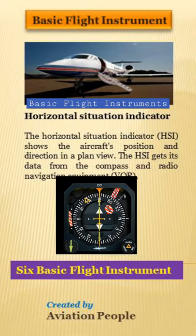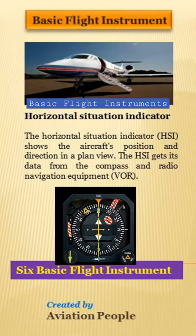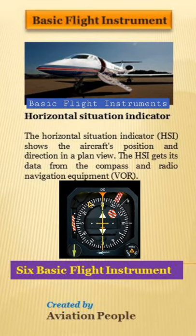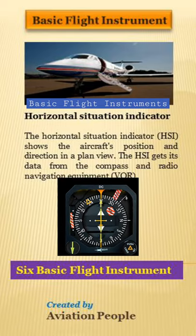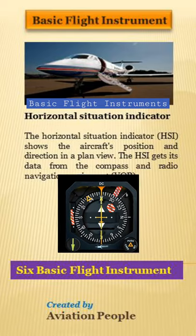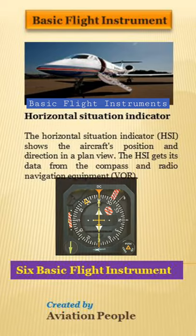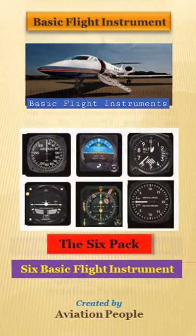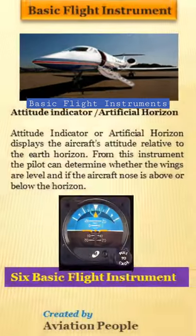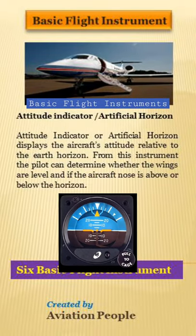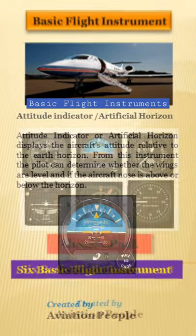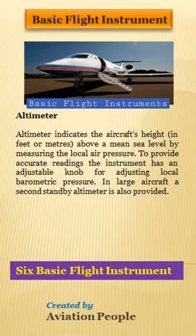The Horizontal Situation Indicator shows the aircraft position and direction in a plan view. The HSI gets its data from the Compass and Radio Navigation Equipment. The Attitude Indicator, or Artificial Horizon, displays the aircraft's attitude relative to the Earth's horizon.